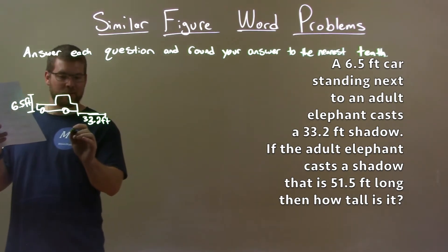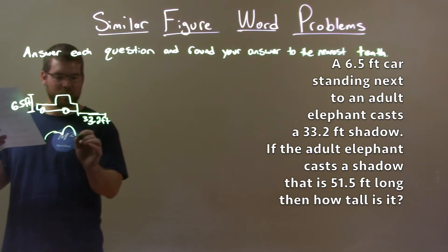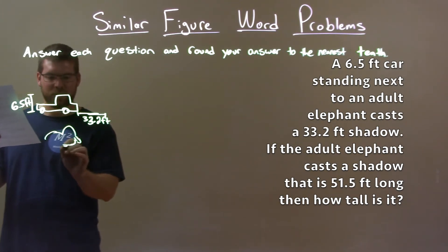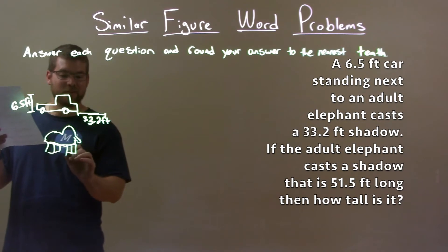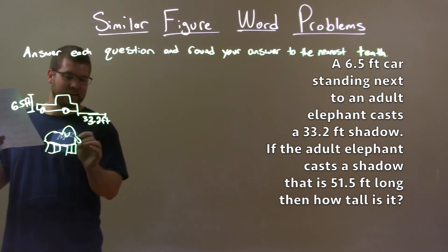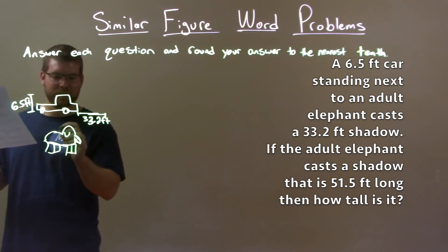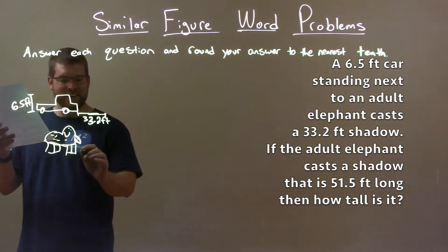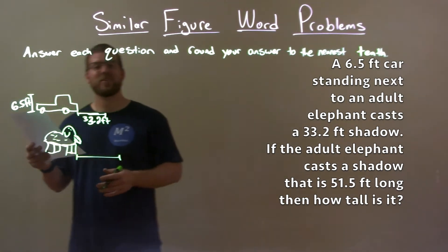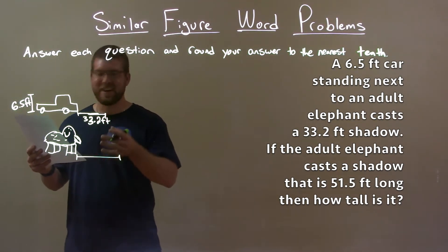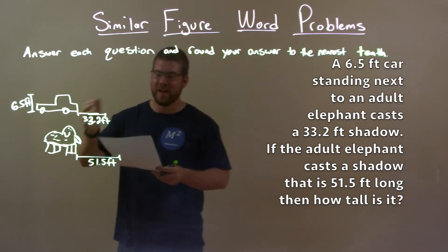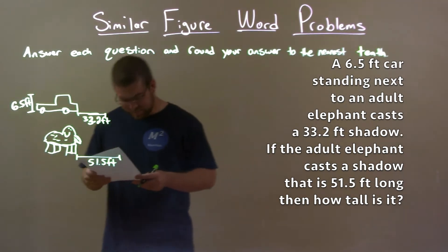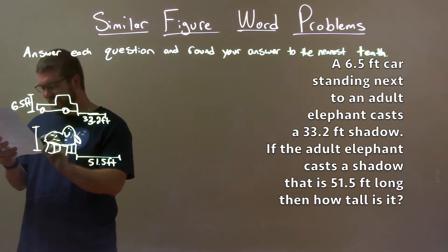Now we've got an elephant. They're kind of big, they have a little trunk, and they're roly-poly — it's kind of like a weird looking duck thing. They have a little tail, big elephant legs, and big ears. This little elephant casts a shadow that's 51.5 feet long. Feel free to write in the comment section how bad my elephant drawing is. We want to find the height of the elephant.